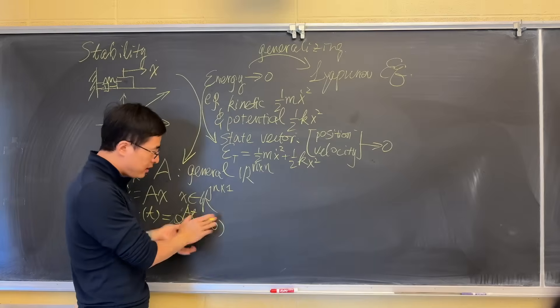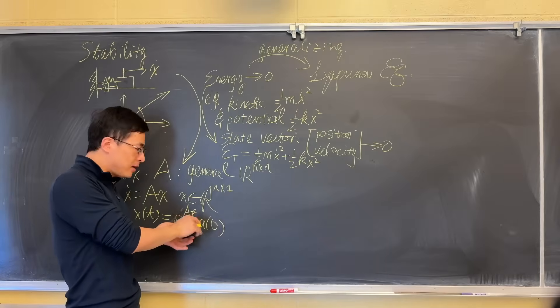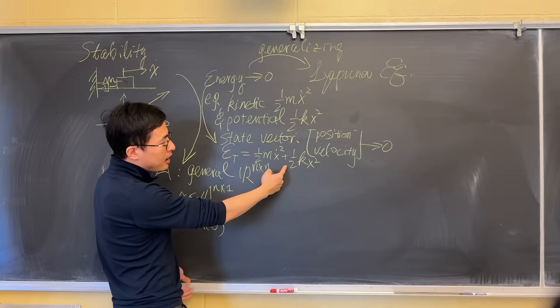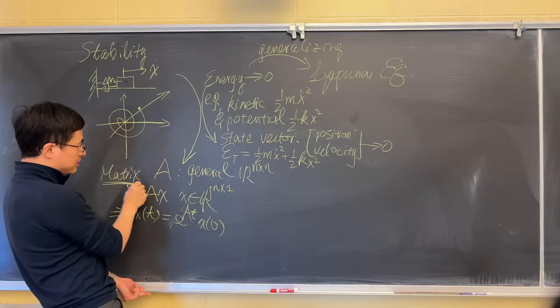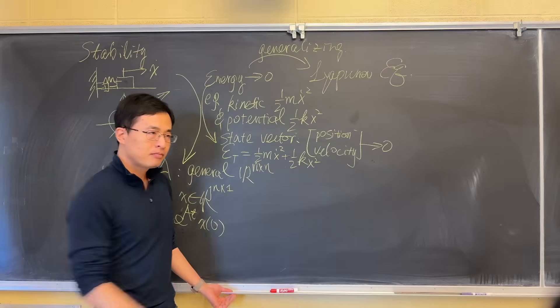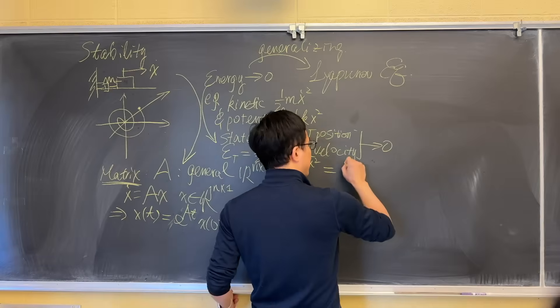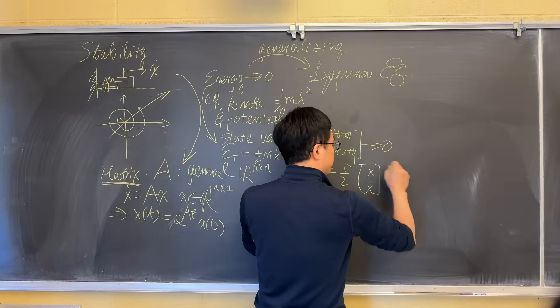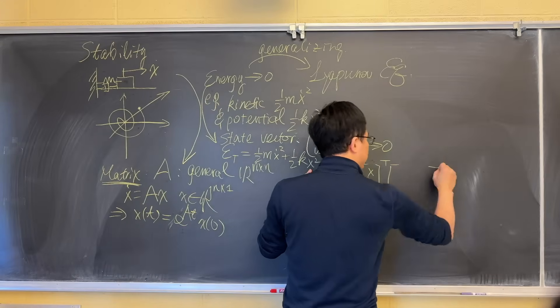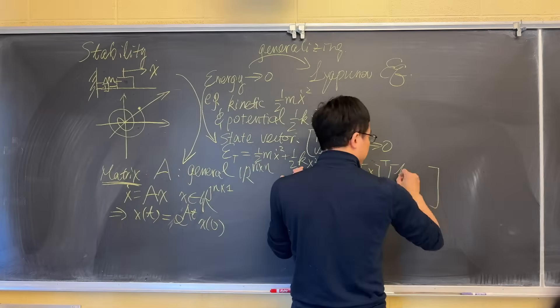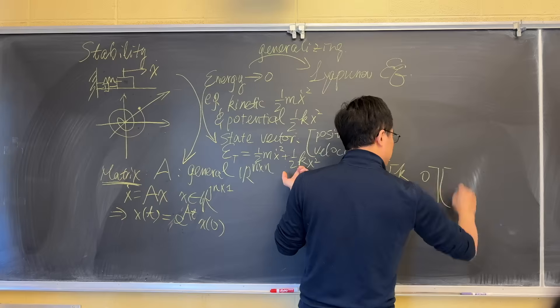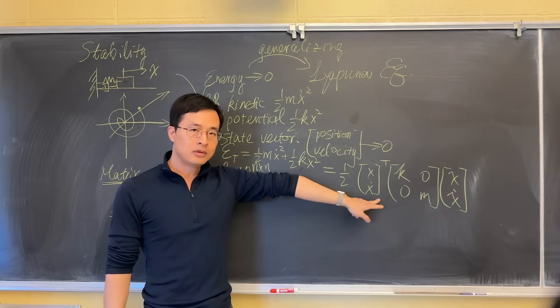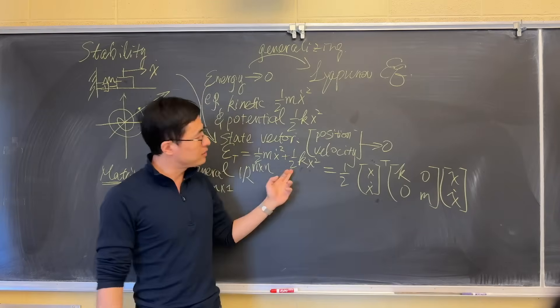Now let's bring more linear algebra. The important thing about modern control theory is how you interpret things in a linear algebra way. Look at this one. How can I somehow bring more matrix analysis into this? This can be written as half of this state vector, position and velocity, transpose, and then K, this matrix here, times the vector. This is equivalent to this if you multiply things out.